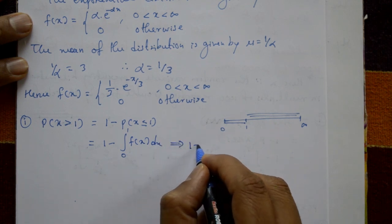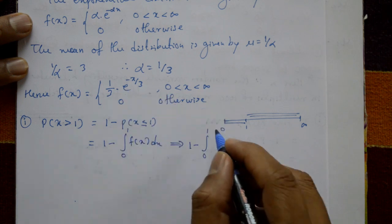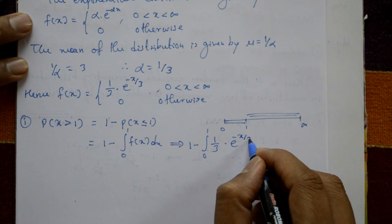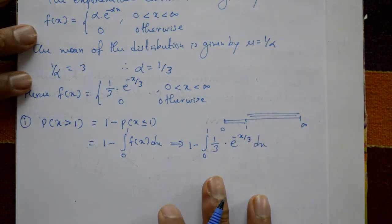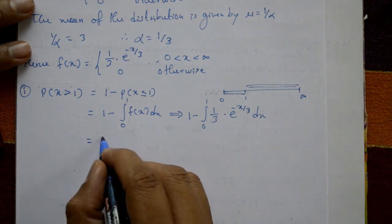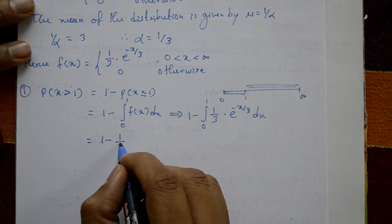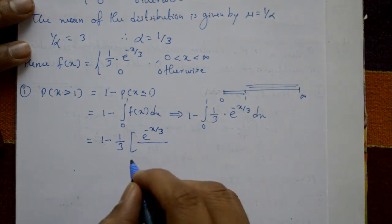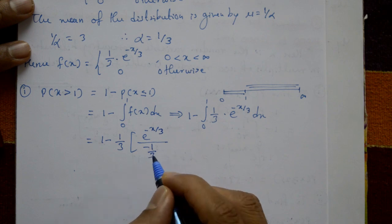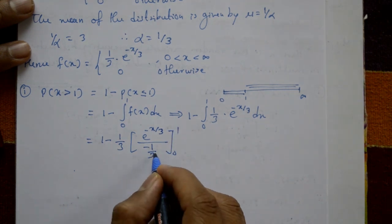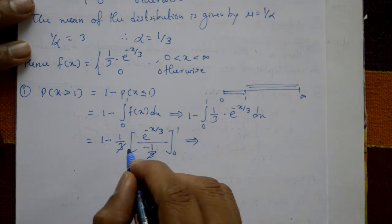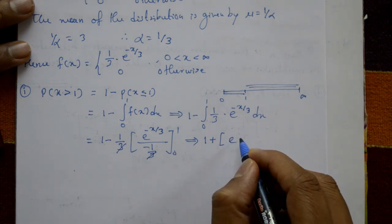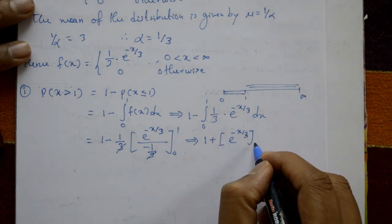This equals 1 minus the integral from 0 to 1 of (1/3) · e^(−x/3) dx. Integrating, (1/3) is a constant, and integrating e^(−x/3) gives e^(−x/3) divided by (−1/3). The 3's cancel, leaving the limit evaluated from 0 to 1 as 1 minus [−e^(−x/3)] from 0 to 1.